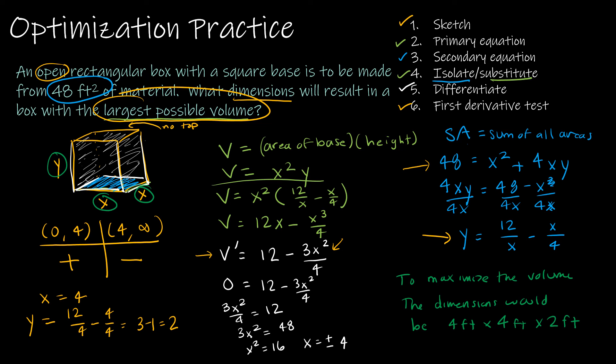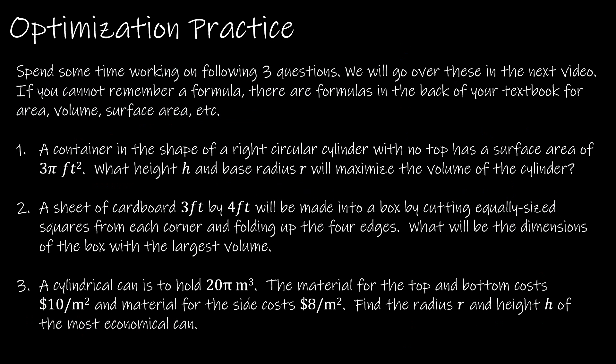To maximize the volume, the dimensions would be 4 feet by 4 feet by 2 feet. It didn't ask for the volume, but if it did: 4 × 4 × 2 = 32 cubic feet. Optimization can be very difficult, so I'm giving you three more questions to practice. We'll go through the solutions together in the next video, so please do those before moving on.